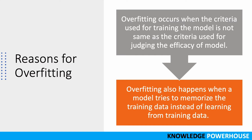What are the reasons for overfitting? Overfitting occurs when the criteria used for training the model is not the same as the criteria used for judging the efficacy of the model. Overfitting also happens when a model tries to memorize the training data instead of learning from it. In supervised learning, if the model is memorizing the links between features and labels rather than learning to generalize, that causes overfitting. We have to find ways for the model to predict in a general way, not in a memorization way.